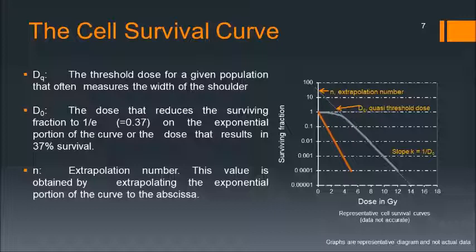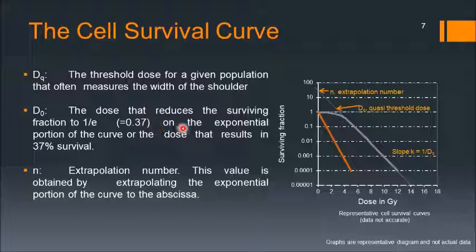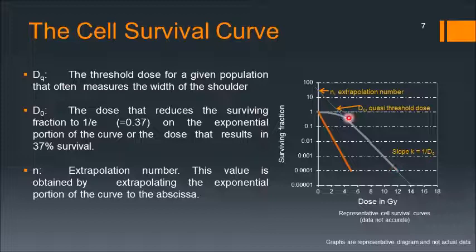Some more parameters can be derived from the cell survival curve. Number one is DQ, the quasi-threshold dose, which is the threshold dose for a given population and measures the width of the shoulder. D0 is the dose that reduces the surviving fraction to 37% on the exponential portion of the curve. The factor N is the extrapolation number, obtained by extrapolating the exponential portion of the curve to the y-axis. I will discuss something very similar to this extrapolation number later in this lecture.